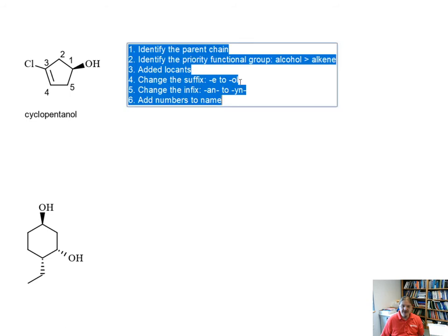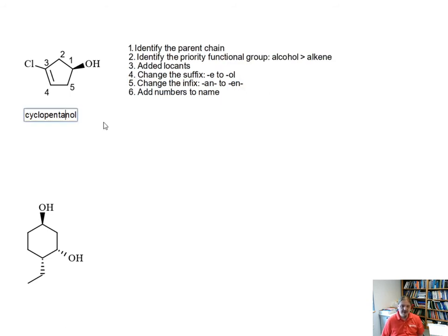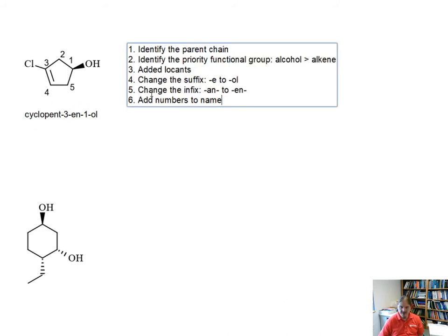We need to change our suffix to cyclopentanol. We need to change our infix not to yn but to en for the alkene. We need to add the numbers to the name so we can show where the locants are and so I'm going to put in 1-ol and 3-en and we have one more thing to do and that's to add the substituents to the name.